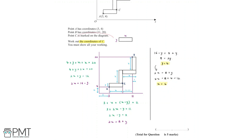Now we want to find the coordinates of point C, labelled on our diagram. We know the coordinates of point A are (3, 4), and to get from A to C we move x spaces to the right and y spaces up. With x equals 6 and y equals 4, the x-coordinate of C is 3 plus 6 equals 9, and the y-coordinate is 4 plus 4 equals 8.